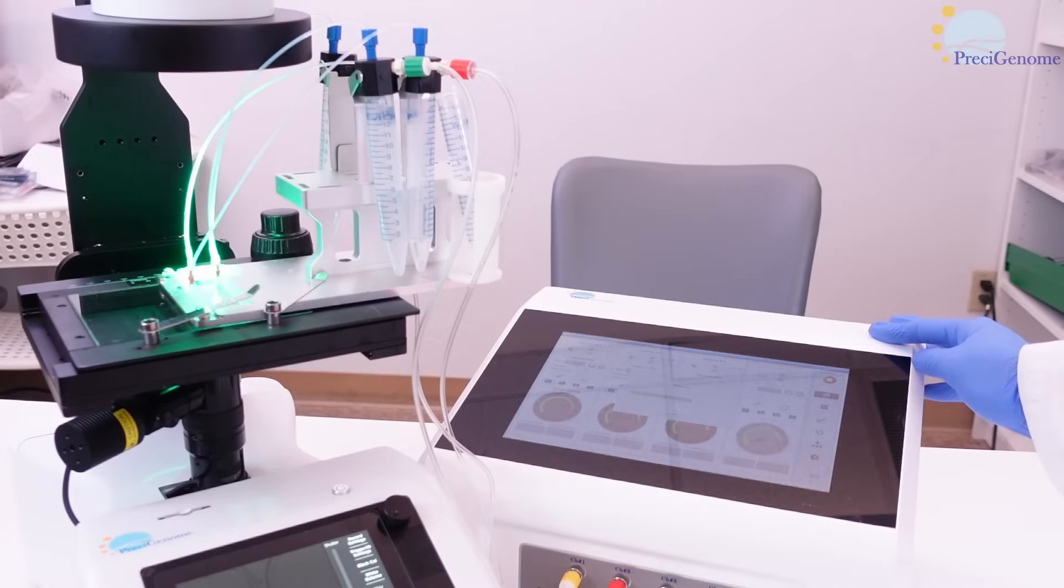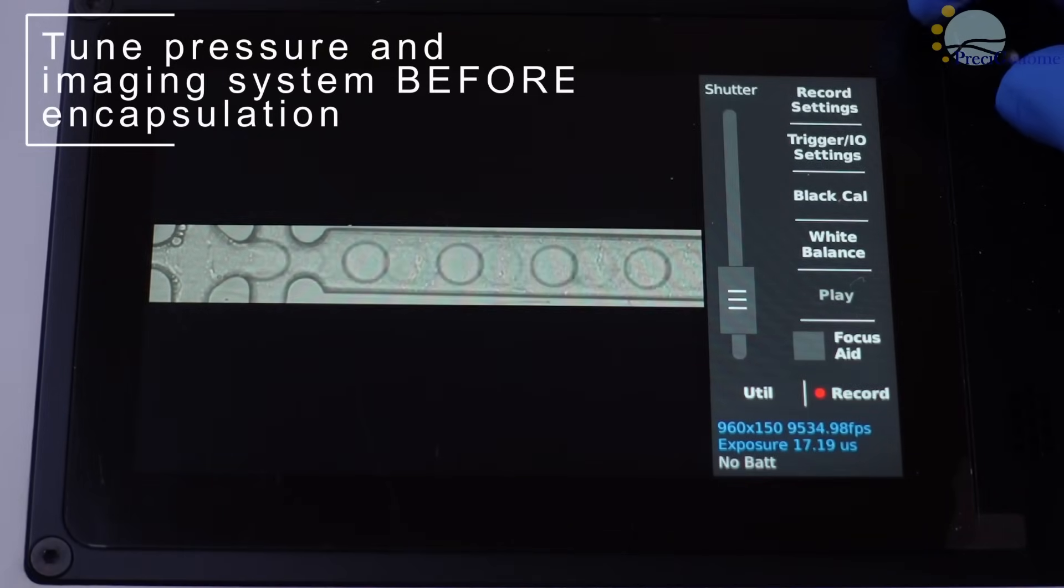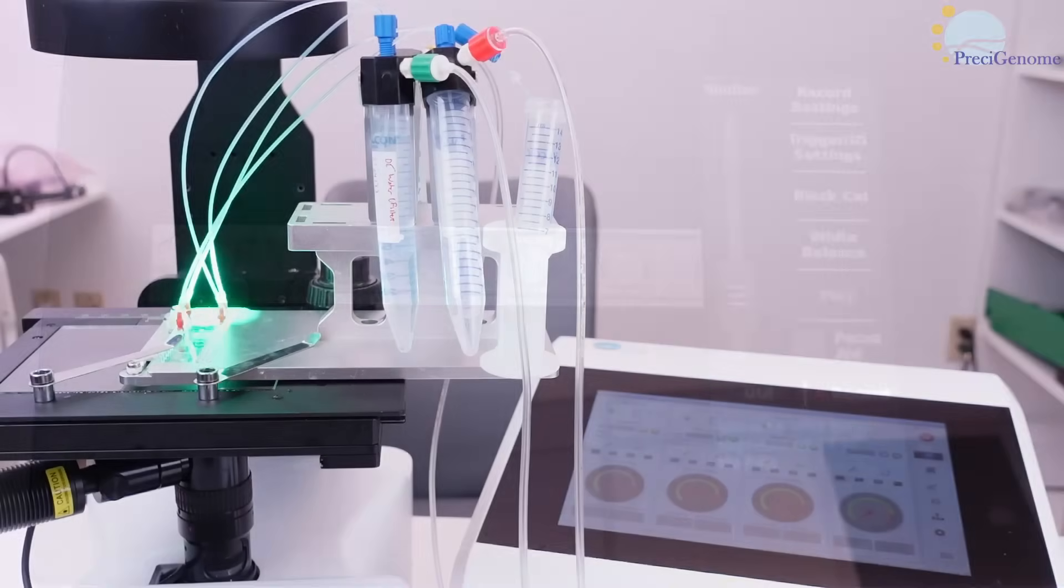Once all the inlet tubing is primed, set your desired pressures and run the iFlow Touch. Now is a good time to tune your pressure and adjust the imaging system's settings, like focus, zoom, or shutter.